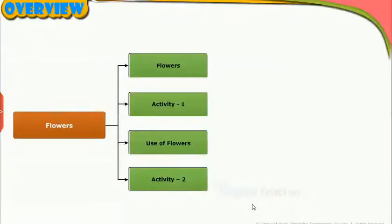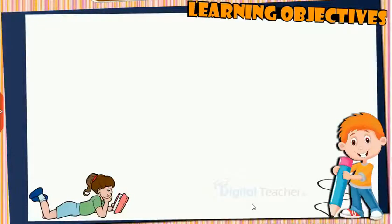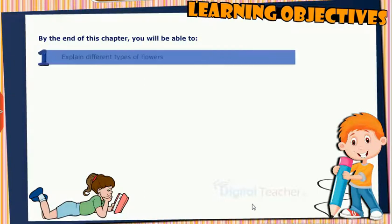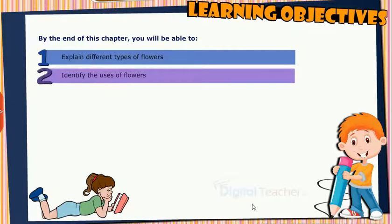This slide presents the overview of the chapter. Learning Objectives: By the end of this chapter, you will be able to explain different types of flowers and identify the uses of flowers.